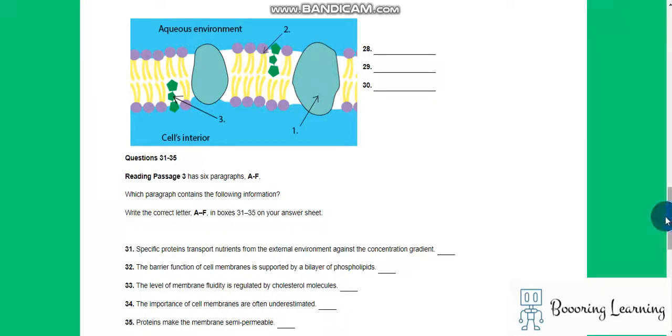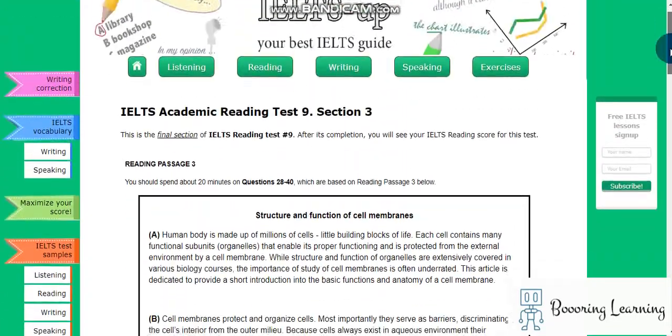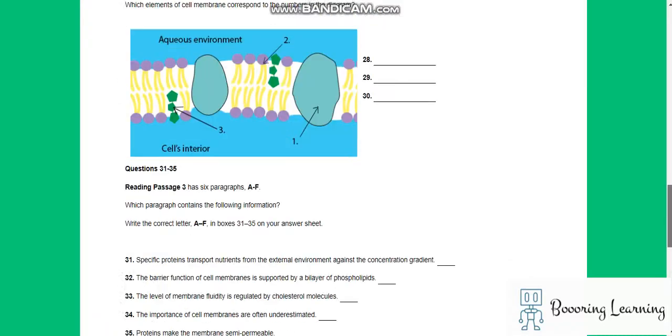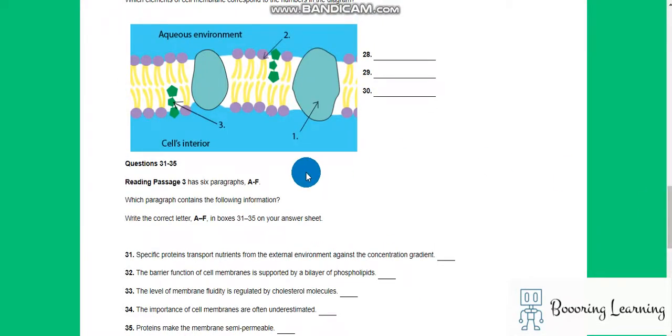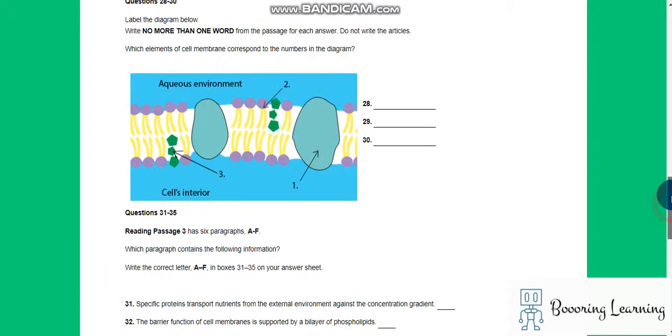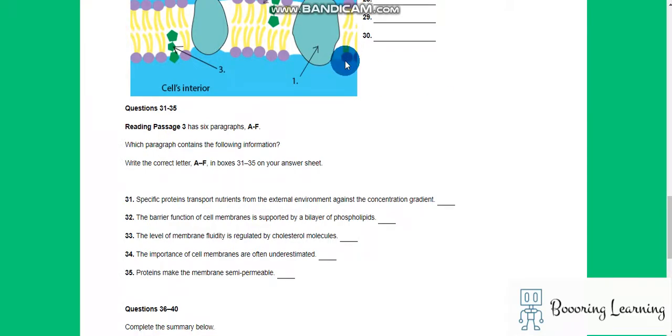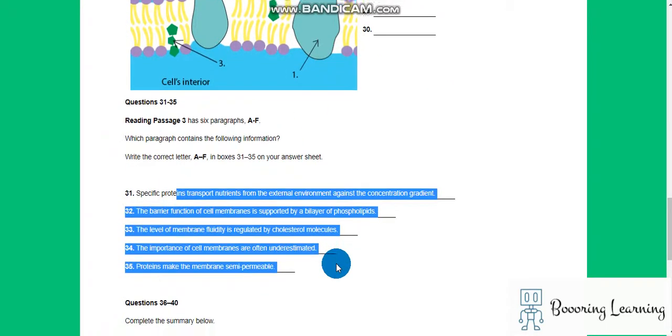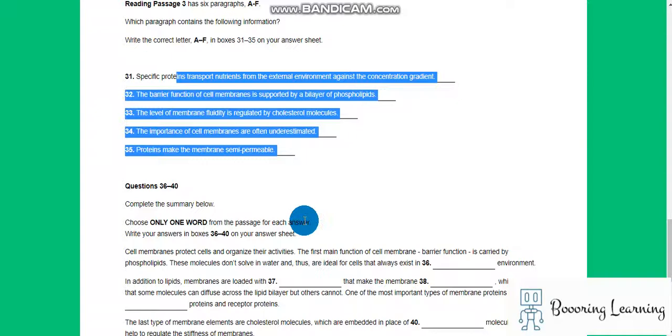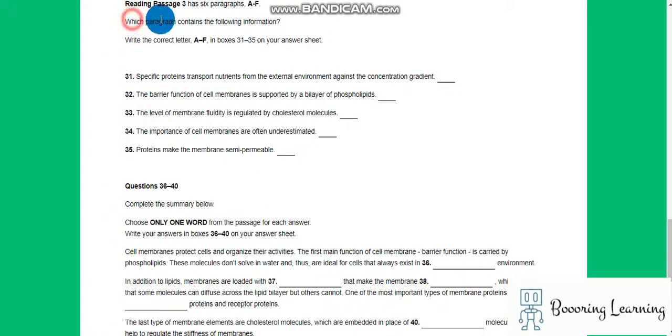Hi, hello, it is IELTS academic reading test 9, section 3. So we have answered questions between 28 to 30, now time to answer questions between 31 to 35. Okay, which paragraph contains the following information?